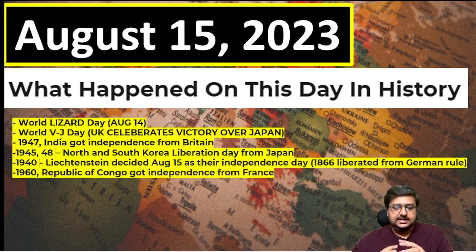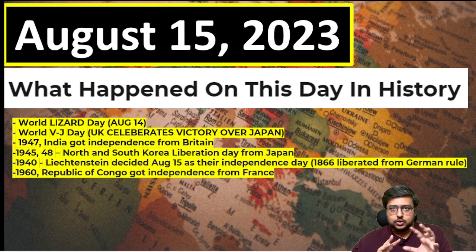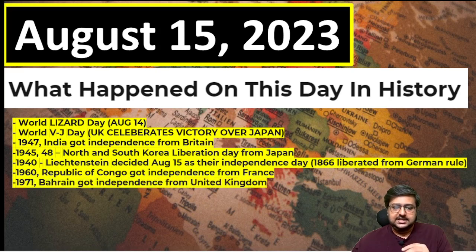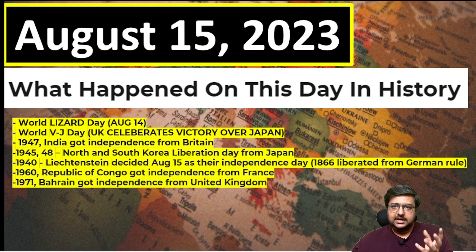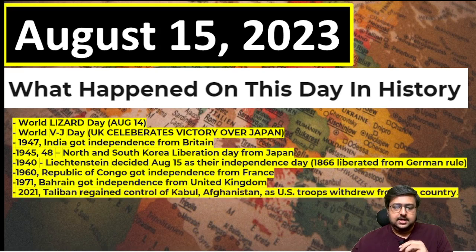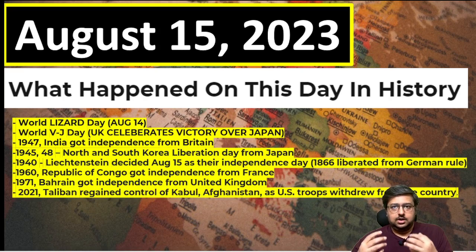In 1960, the Republic of Congo in Africa got independence from France. France was colonizing most of the African countries. Then Bahrain, a small island-like country in the Middle East, got independence from UK in 1971 on August 15th.